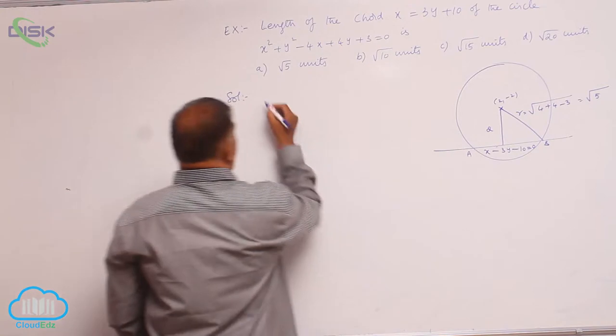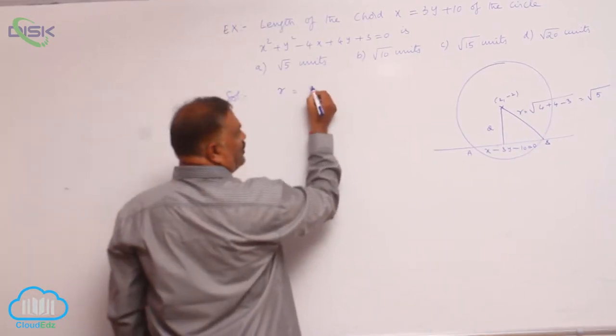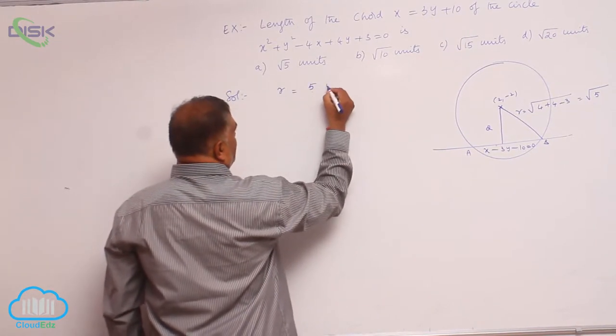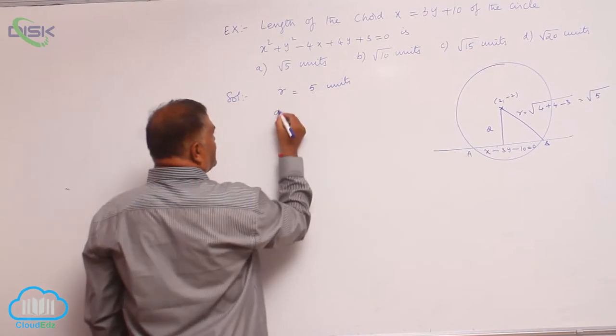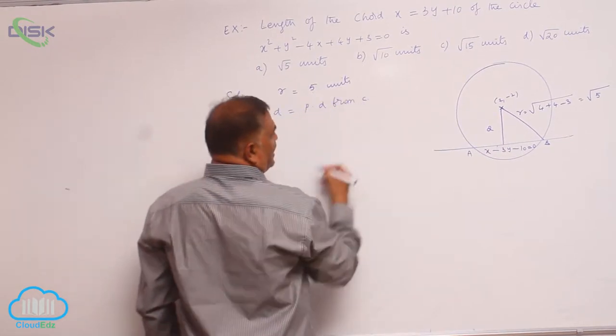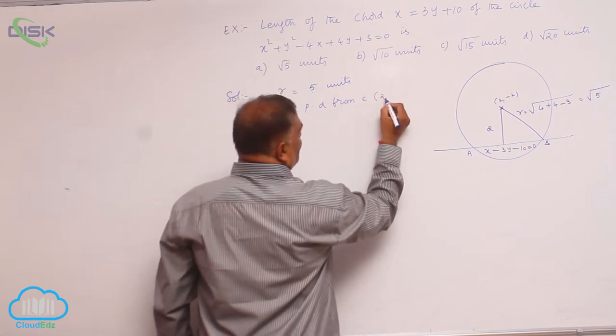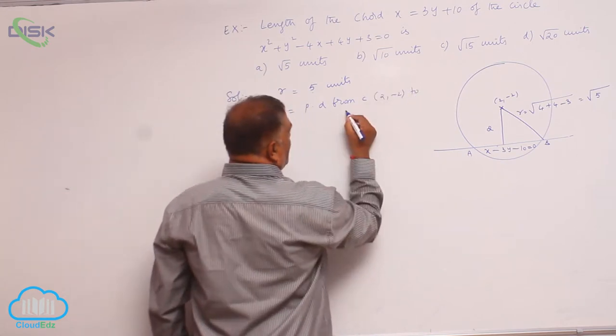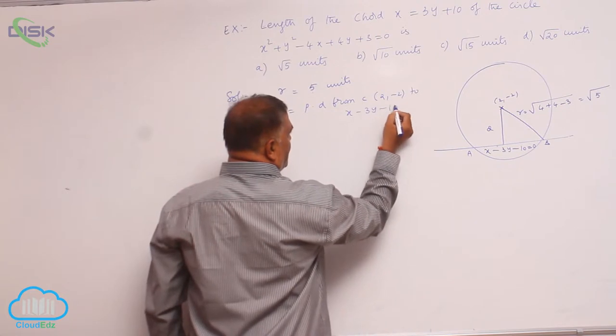Now we will find out radius is equal to 5 units and d is equal to perpendicular distance from center. What is center now? 2 comma negative 2 to x minus 3y minus 10 equal to 0.